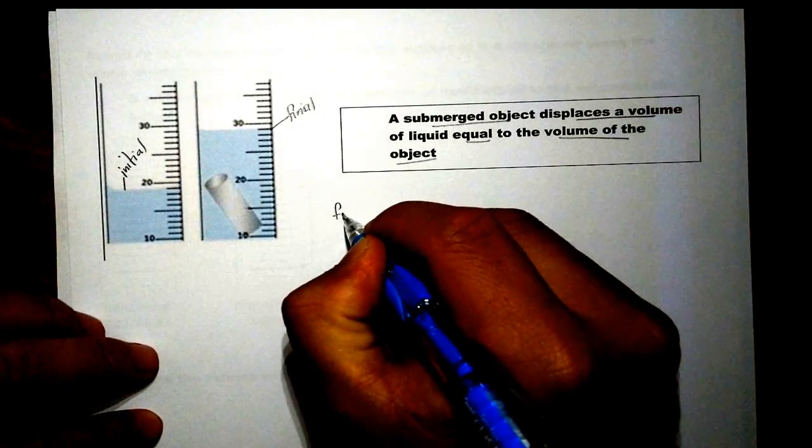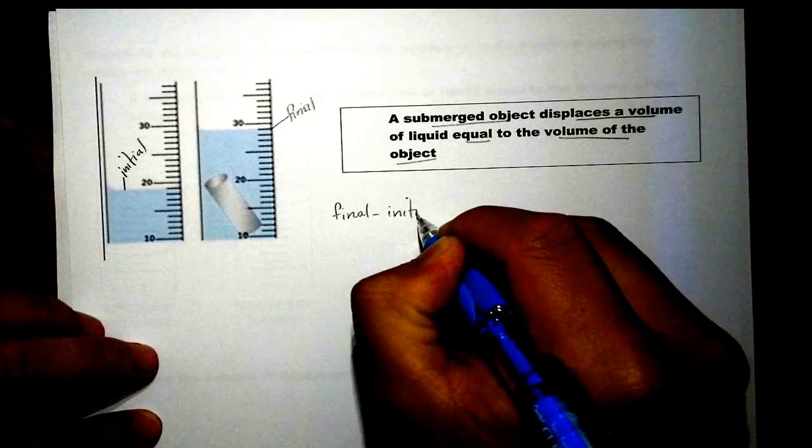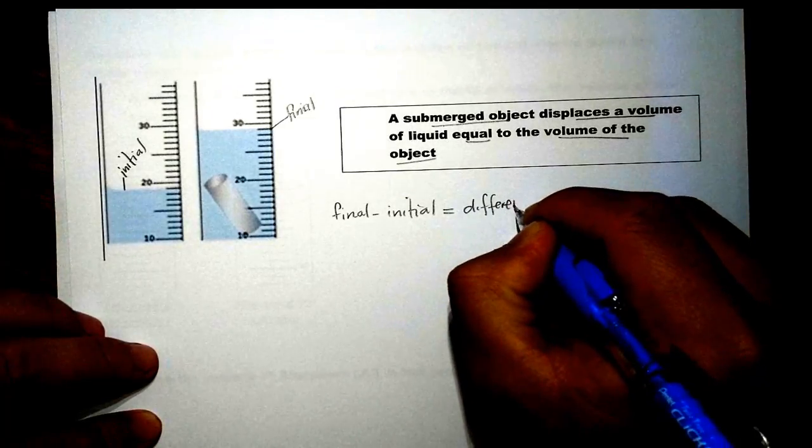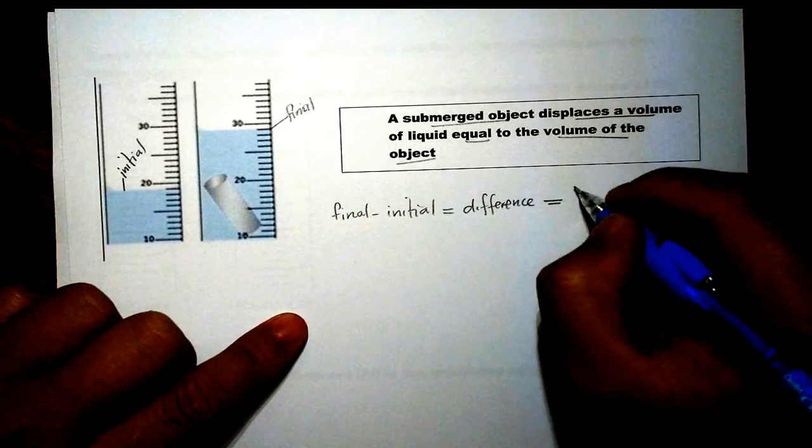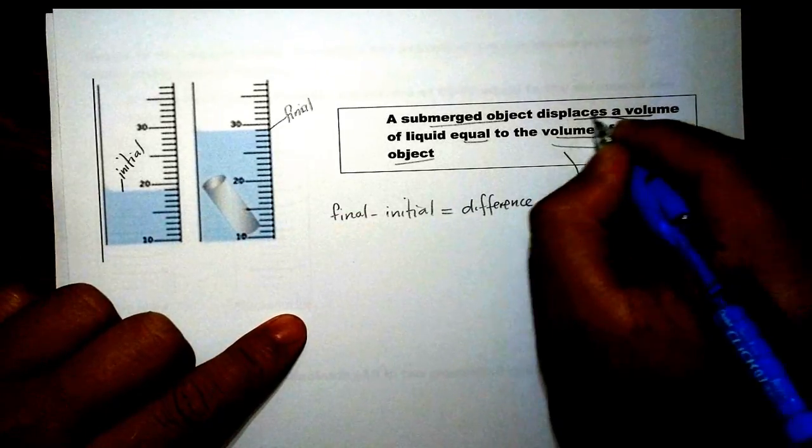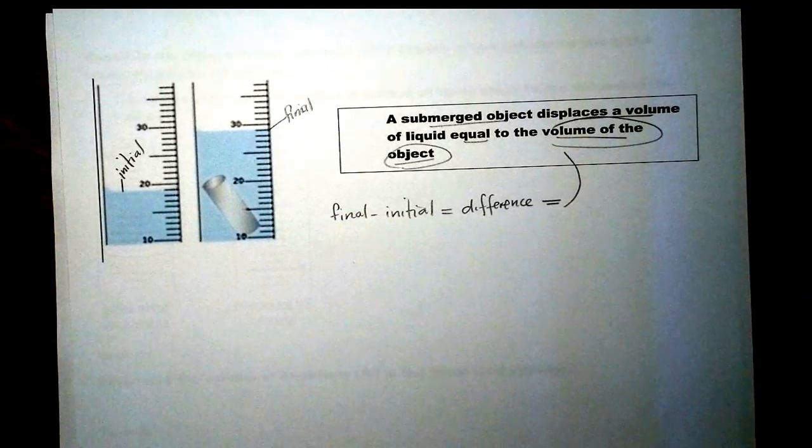So we take final minus initial. That will give us the difference, which equals the volume of the object. Right there. Let's do an example.